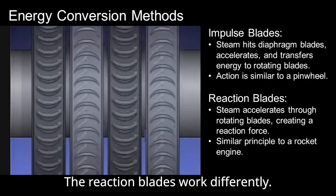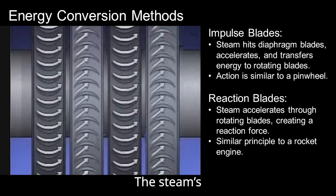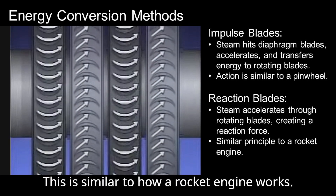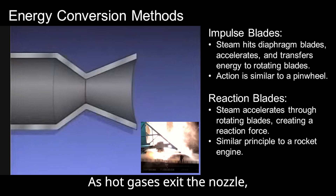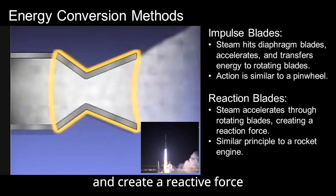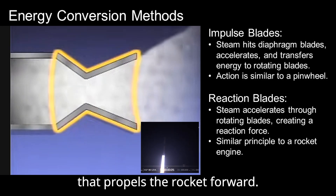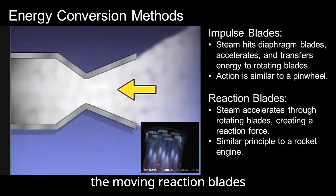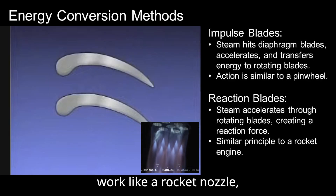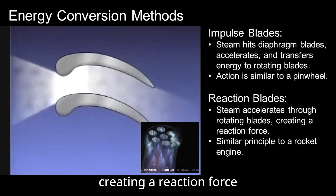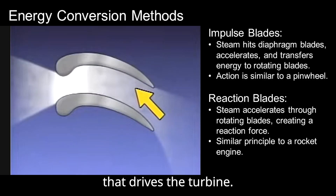Reaction blades work differently — the steam speed causes the rotating blades to move. This is similar to how a rocket engine works. As hot gases exit the nozzle, they accelerate and create a reactive force that propels the rocket forward. In the turbine, the moving reaction blades work like a rocket nozzle, with the steam accelerating as it exits the blades, creating a reaction force that drives the turbine.